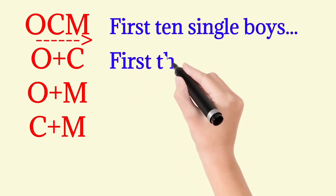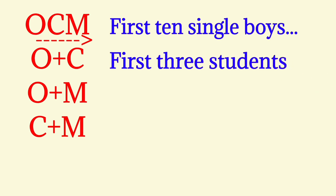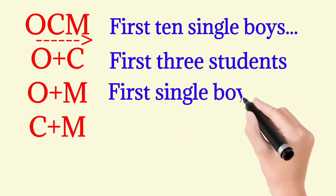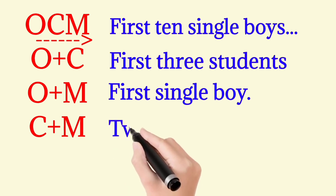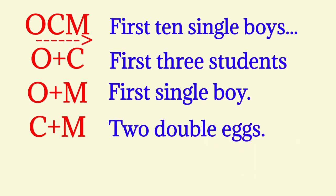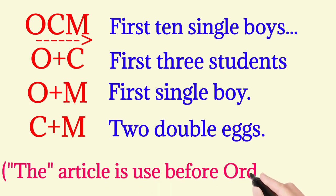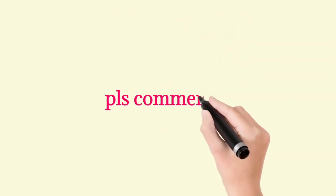Additional examples: first three students — first is ordinal, three is cardinal. First single boy — first is ordinal, single is multiplicative. Second double eggs — second is cardinal, double is multiplicative. The article 'the' is used before an ordinal adjective.